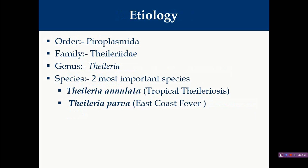Regarding etiology, the genus Theileria has two important species: Theileria annulata and Theileria parva. Theileria annulata is responsible for tropical theileriosis, seen in North Africa as well as India and other parts of Asia. This is a very important disease in India and Gujarat. Theileria parva is mainly seen in other parts of Africa, particularly Eastern and Southern Africa.